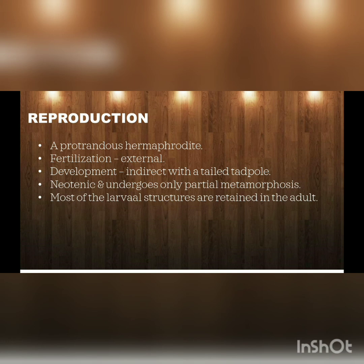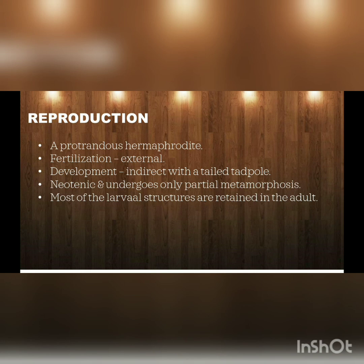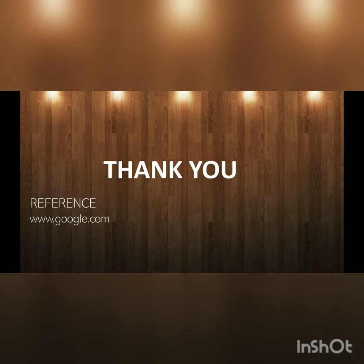Reproduction: Oikopleura is a protandrous hermaphrodite, meaning the male reproductive organs come to maturity before the female. Fertilization is external and development is indirect with a tailed tadpole larva. It is neotonic and undergoes only partial metamorphosis. Most of the larval structures are retained in the adult. Thank you.